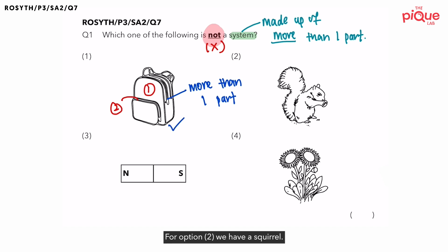Option 2, we have a squirrel. Now, squirrel is a living thing just like all human beings. Now let me ask you, as a human, can you tell me what are the systems that are present in your body? Remember, you have learned five body systems. So what are the five body systems that are found in all humans?